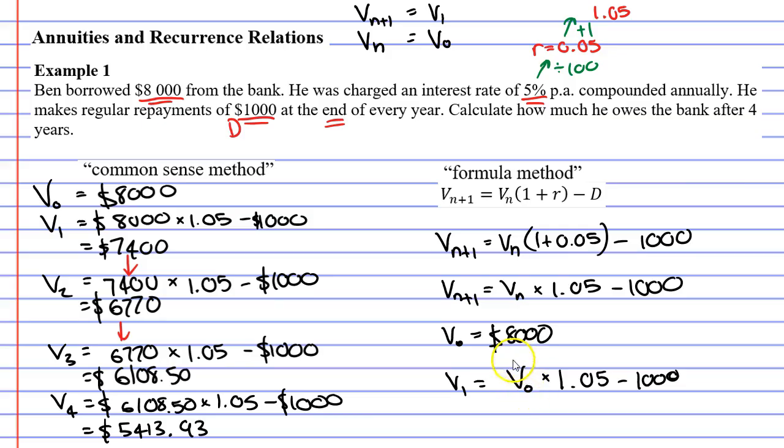So where do we move from here? Well, we know what V0 is. It's $8,000. So we can come down here and go V1 equals $8,000 times 1.05 minus 1,000. If you look to the left, our calculation for V1 here and our common sense method is exactly the same as our calculation using the formula method. So we're going to get the exact same solution. We're going to get $7,400.